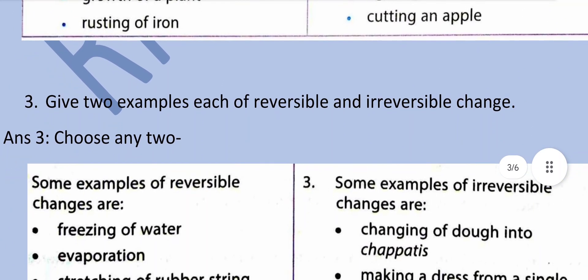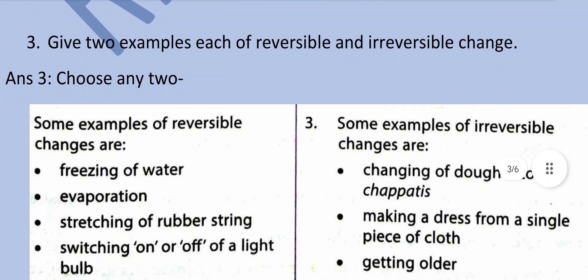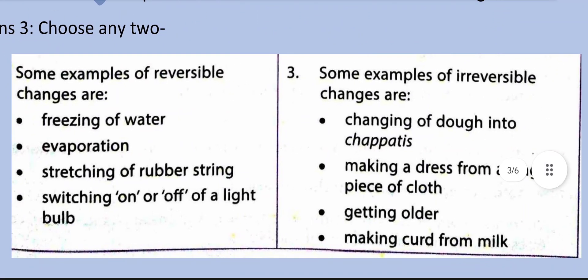Give two examples of reversible and irreversible change. Some examples of reversible changes are freezing of water, evaporation, stretching of a rubber string, and switching on or off a light bulb. Some examples of irreversible changes are changing dough into chapatis, making a dress from a single piece of cloth, getting older, and making curd from milk. Making a dress is irreversible because the cloth has been cut.